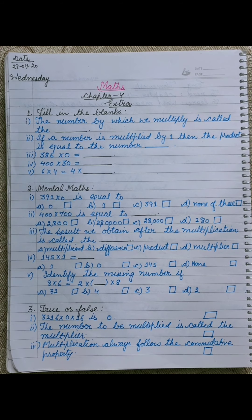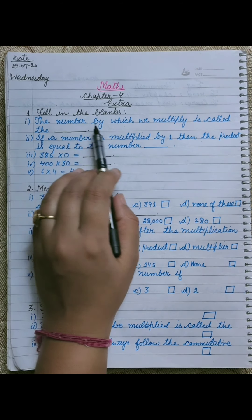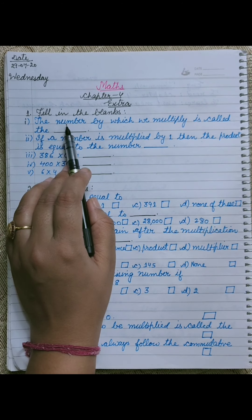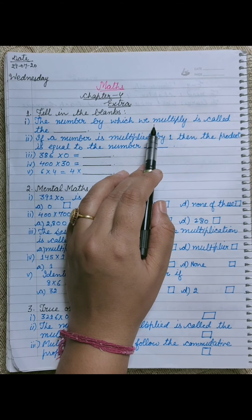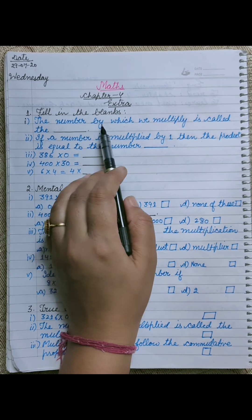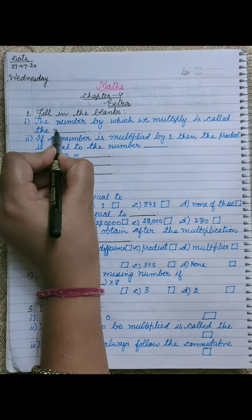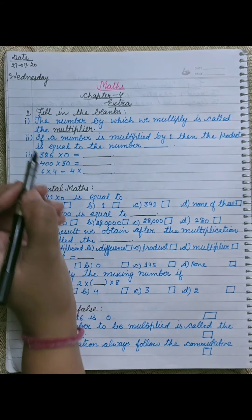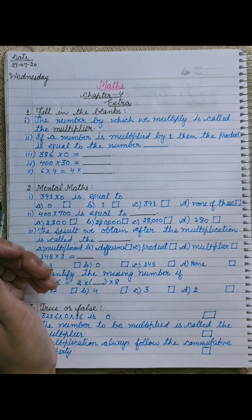First is fill in the blanks. The number by which we multiply is called the dash. The number by which we multiply is called the multiplier — M-U-L-T-I-P-L-I-E-R. For example, 16 multiply by 12, so 12 is the multiplier.